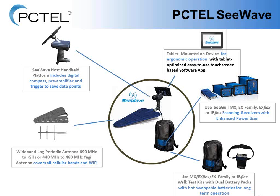The components of C-Wave include: a scanning receiver — any of PCTEL's scanners from the MX EX Flex to the latest Segal IB Flex; a host handle platform, which is the heart and brain of the system. The host handle platform connects to the scanning receiver, has a mount for the tablet, a digital compass, a built-in GPS receiver, and an N-type connector for antennas. The tablet mounts on the platform and runs a Windows-based touchscreen application for C-Wave.